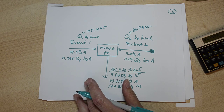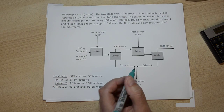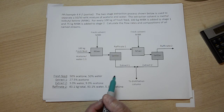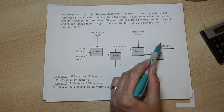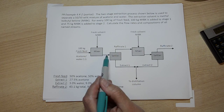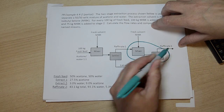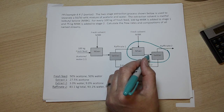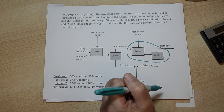Now we can return to our flow diagram. We've calculated the flow rates of these two extract streams; we know all the outside streams and a little bit about the compositions of the extract streams. We're in a good position to stay in this quadrant of the flow sheet and solve a few more balances. Since we know a lot about these outlet streams and a little less about what's going on to the left, I'm going to do the next balance on Stage 2 of the extraction system. There's no need to do balances across the internal stream since I was only asked for the named streams.